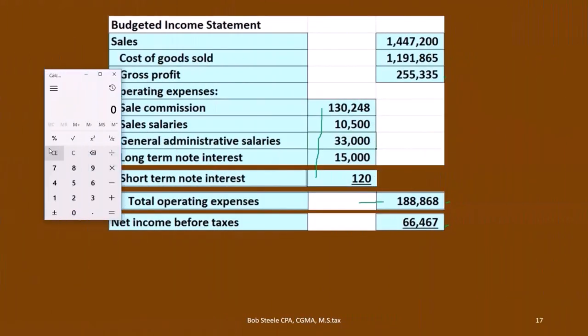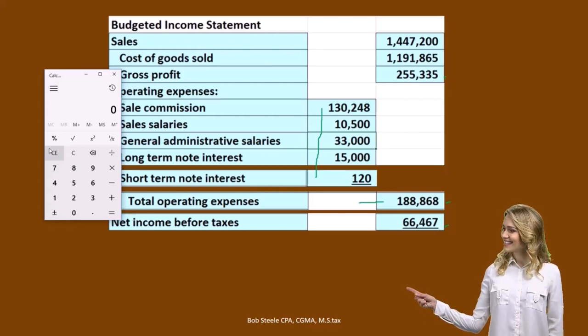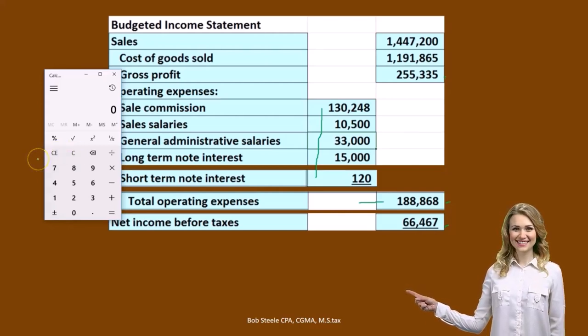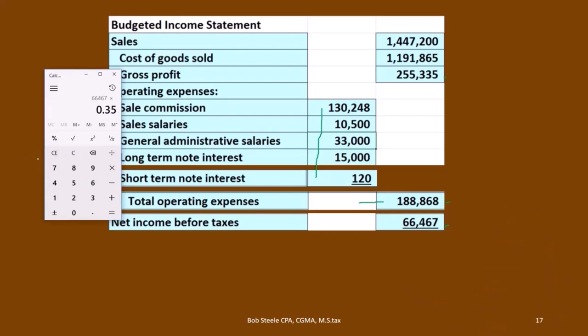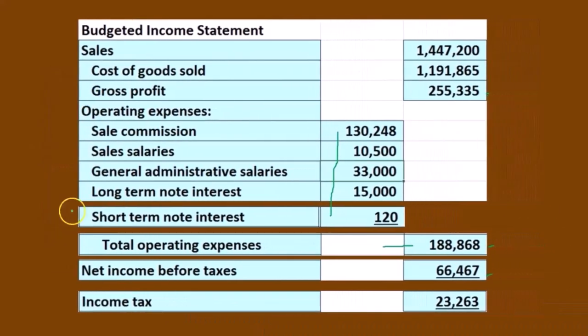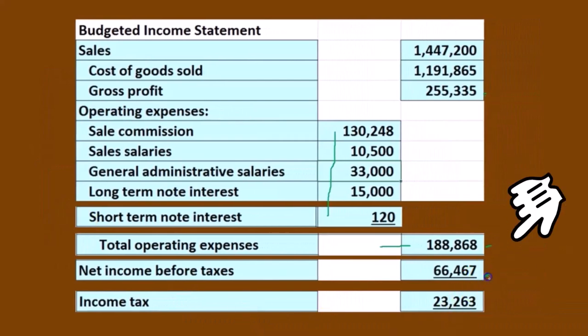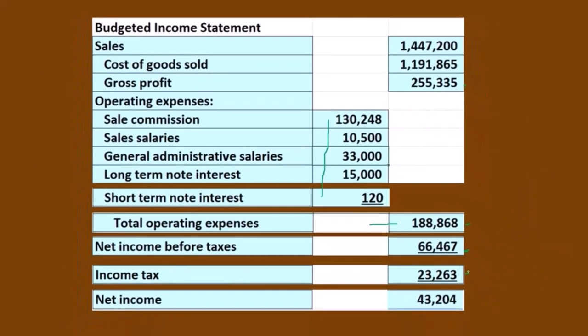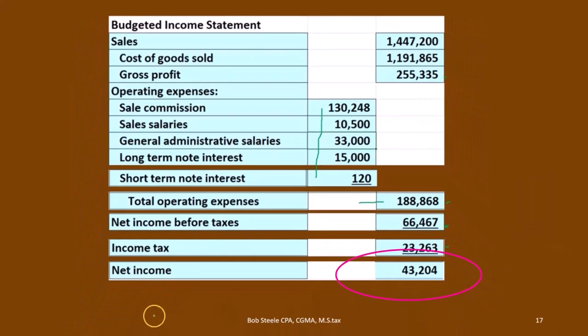We're going to assume a tax rate of 35%. We generally break out the taxes separately as a line item, even though they are an expense, because taxes tend to distort the picture and vary in relation to net income. So we take $66,467 at a 35% tax rate, and that gives us taxes of $23,263. Then income before taxes minus the taxes gives us net income of $43,204.